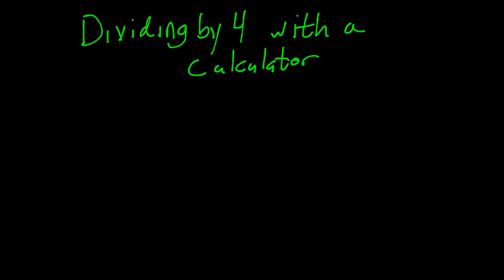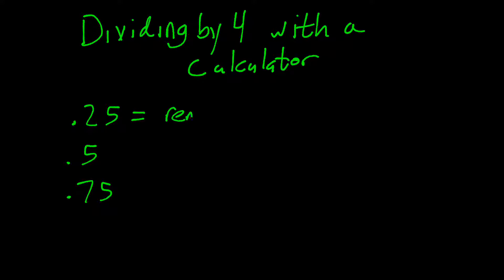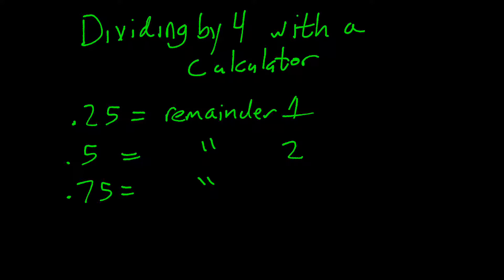If you're using a calculator to divide by 4 and trying to find the remainder, you won't get a whole-number remainder — you'll get a decimal. So if you get .25, that's the same as remainder 1. If you get .5, that's remainder 2. And if you get .75, that's remainder 3. This is a handy shortcut if you aren't confident in your long division skills but still want to use the divide-by-4 method to figure out which part of the pattern the exponent matches.